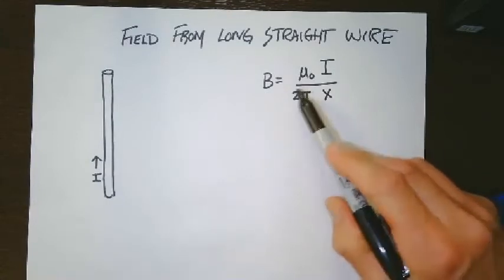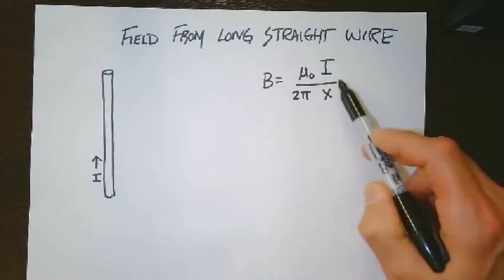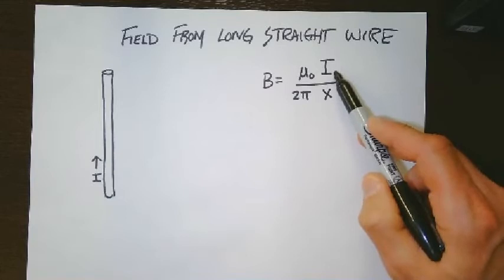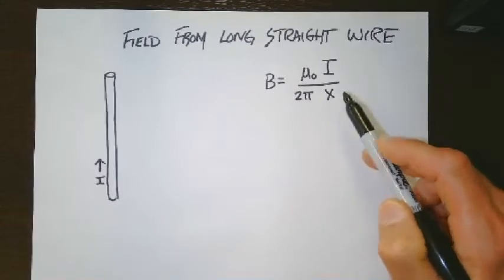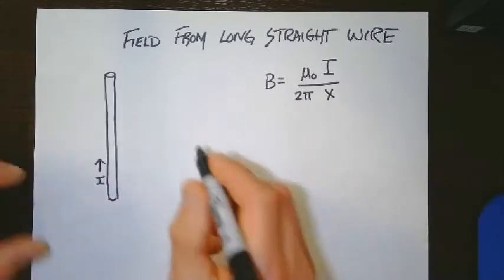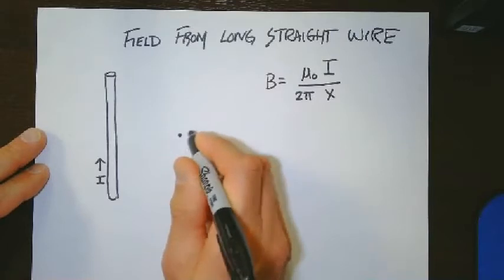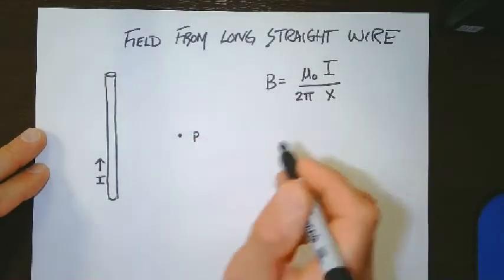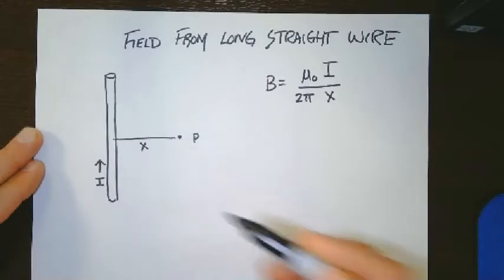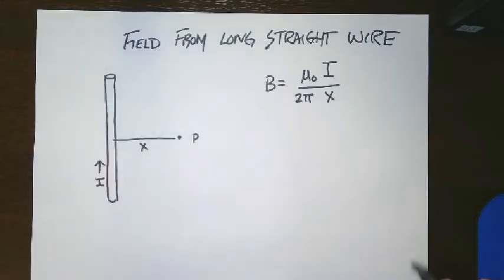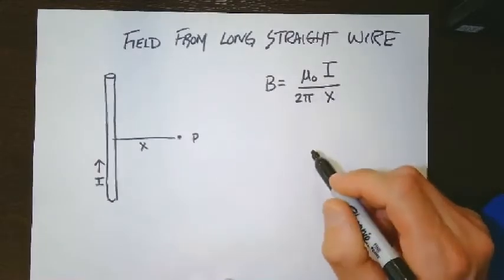So we know that the answer to this is given by kind of a famous formula here, right? The magnetic field is going to be proportional to the current that's being carried in the wire, but it's going to be inversely proportional to the distance away from the wire. So why don't we show that distance here? You've got like a point out here, point P. And that distance X is the perpendicular distance away from the wire. Of course, the stuff in front, those are just your constants.